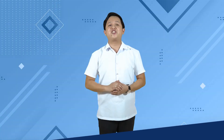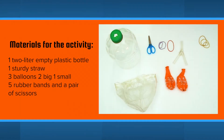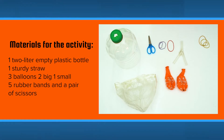Let's have a short demonstration on how your respiratory system works by making a lung model. The materials needed are: one 2-liter empty plastic bottle, one sturdy straw, three balloons — two big balloons and one small balloon — five rubber bands, and a pair of scissors.